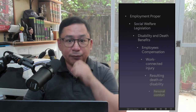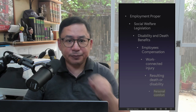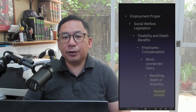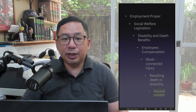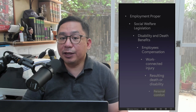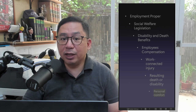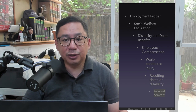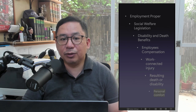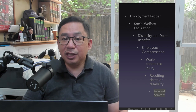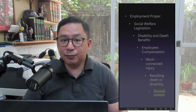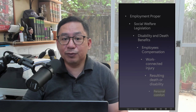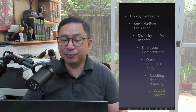Let's mention some relevant doctrines. Personal Comfort Doctrine: Disability or death suffered by an employee while ministering to his personal comfort, such as satisfaction of his thirst, hunger, or other physical demands, shall be deemed to have arisen out of and in the course of employment, hence compensable.